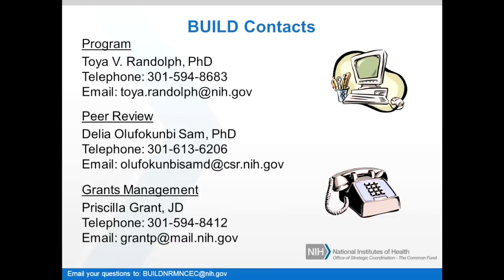If there are other institutions that could be eligible to be primary institutions but they don't want to submit an application as a primary institution, they could certainly partner with another institution. But there is only one primary institution or applicant institution for the U54 application. Can the program directors be different for the different cores or do they all have to be the same people? They can certainly be different. They should be based on expertise, as determined by the team coming together with the primary applicant institution.